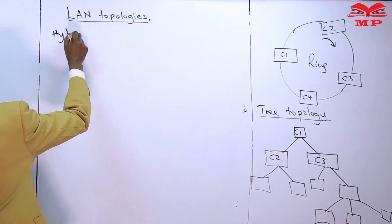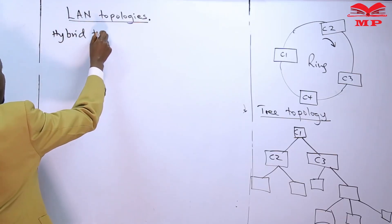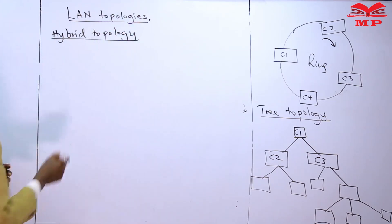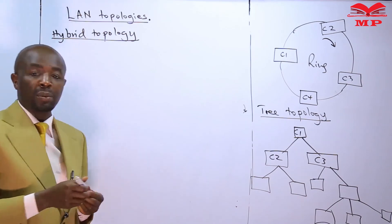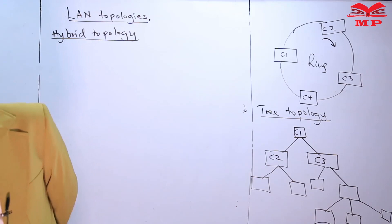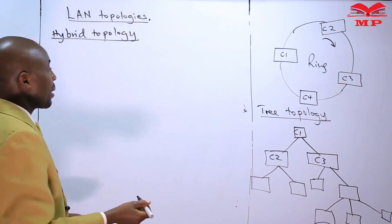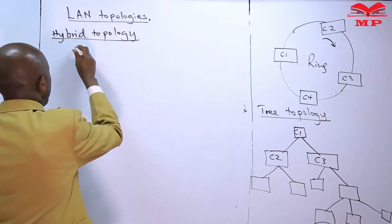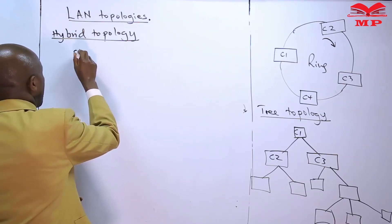Hybrid topology. Hybrid means combining features of two or more networks or two or more topologies. Why do we combine the features? Why do we link two or more topologies? So that we have better features for the hybrid than for each individual topology that we are putting together.